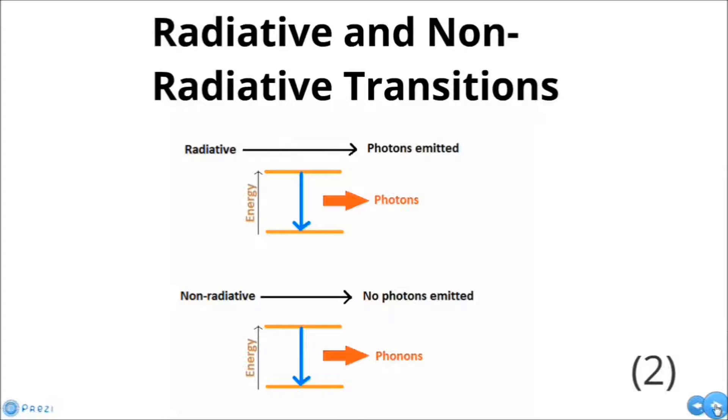We also need to understand the difference between radiative and non-radiative transitions. When an atom comes down from its excited state, different things can occur. In non-radiative transition, the atom goes from a higher energy level to a lower one, often a metastable state where the atom can remain for a while, but does not emit an optical photon when it does so.